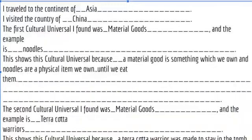Imagine you've done some research and looked for examples of material goods in China. Now start filling out your digital travel notebook. I traveled to the continent of Asia — type that in here. I visited the country of China. The first culture universal I found was material goods, and my example is noodles. This shows the culture universal because a material good is something we own, and noodles are a physical item we own until we eat them.